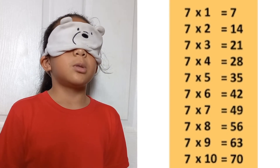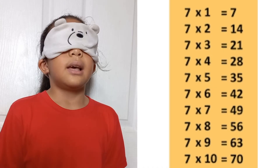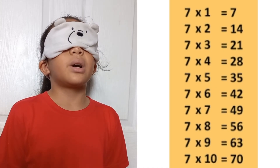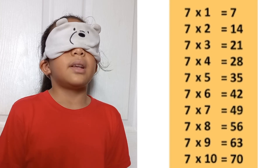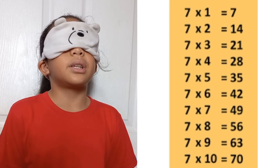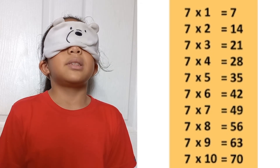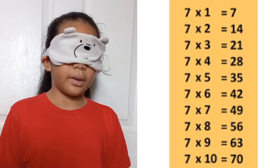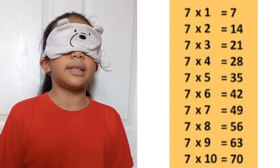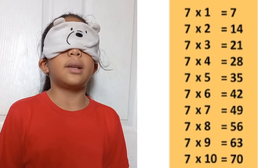7 times 1 equals 7. 7 times 2 equals 40. 7 times 3 equals 21. 7 times 4 equals 28. 7 times 5 equals 35. 7 times 6 equals 42. 7 times 7 equals 49. 7 times 8 equals 56. 7 times 9 equals 63. 7 times 10 equals 70.